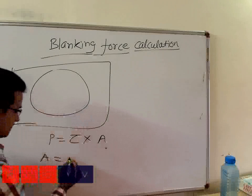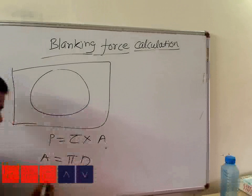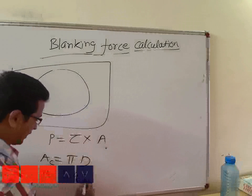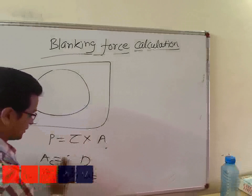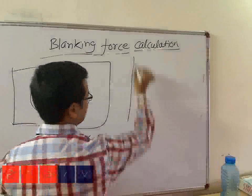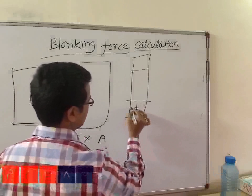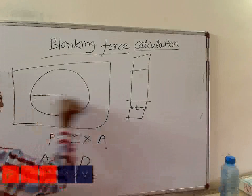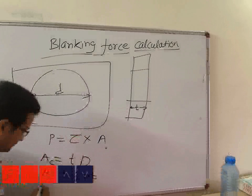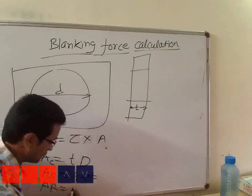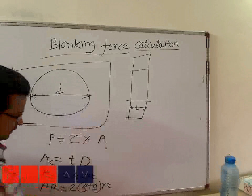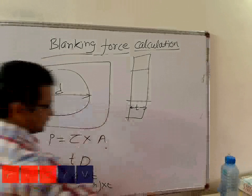this area would be pi × D. For a square, it is 4A into thickness. It is P — that is thickness into diameter. You can see here: this punch, this is the thickness, while this is the diameter. For a rectangle, A will be 2 times (A plus B) into P, where A and B are the length and breadth of the rectangle respectively.